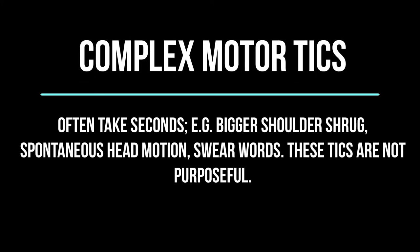Complex motor tics often take seconds and can be anything from a bigger shoulder shrug to a spontaneous head turning. Complex tics look like they're more purposeful, but they're not. They can even include repeating the last sound of a word, or swear words that are unacceptable — and this is never on purpose.